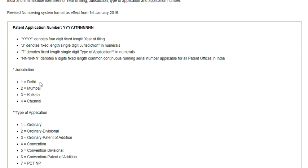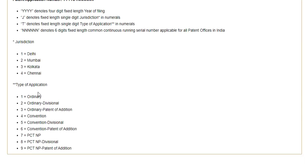The type of application codes (T) are: 1 for ordinary application, 2 for ordinary divisional, 3 for ordinary patent of addition, 4 for convention, 5 for convention divisional, 6 for convention patent of addition, 7 for PCT national phase, 8 for PCT national phase divisional, and 9 for PCT national phase patent of addition.